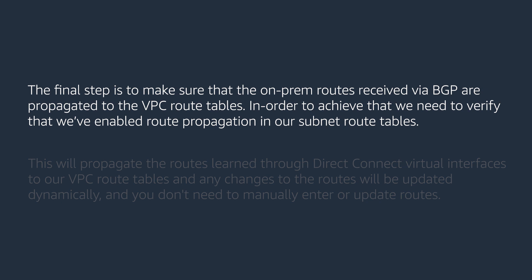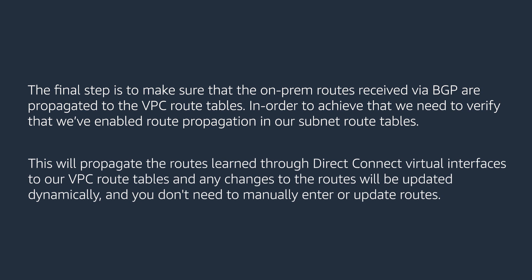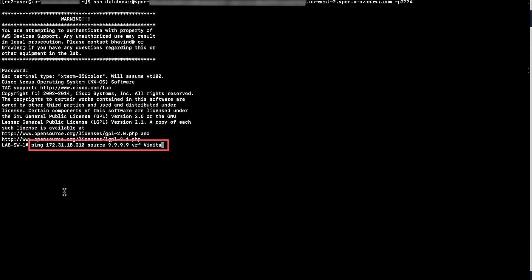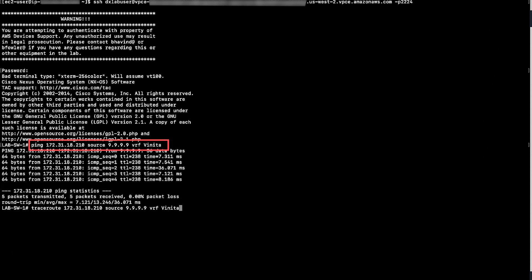The final step is to make sure that the on-premises routes received via BGP are propagated to the VPC route tables. In order to achieve that, we need to verify that we have enabled route propagation in our subnet route tables. This will propagate the routes learned through Direct Connect virtual interfaces to our VPC route tables, and any changes to the routes will be updated dynamically — you don't need to manually enter or update routes. The next step would be to see if we can ping and do a trace route to the instance IP.